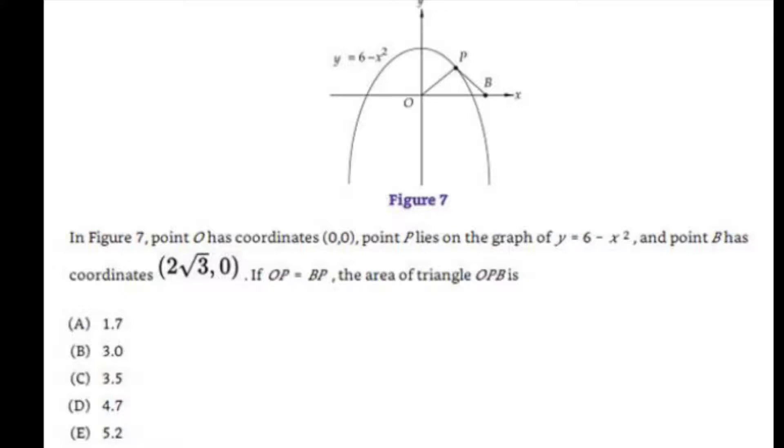then the area of triangle OPB is: A, 1.7; B, 3.0; C, 3.5; D, 4.7; or E, 5.2.